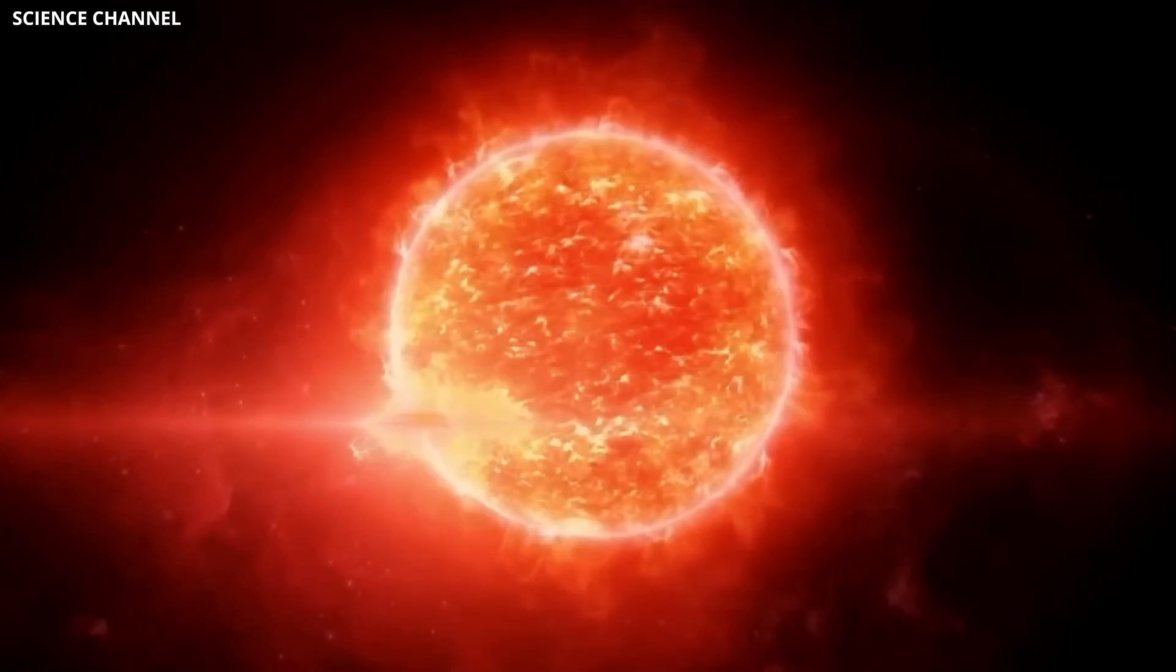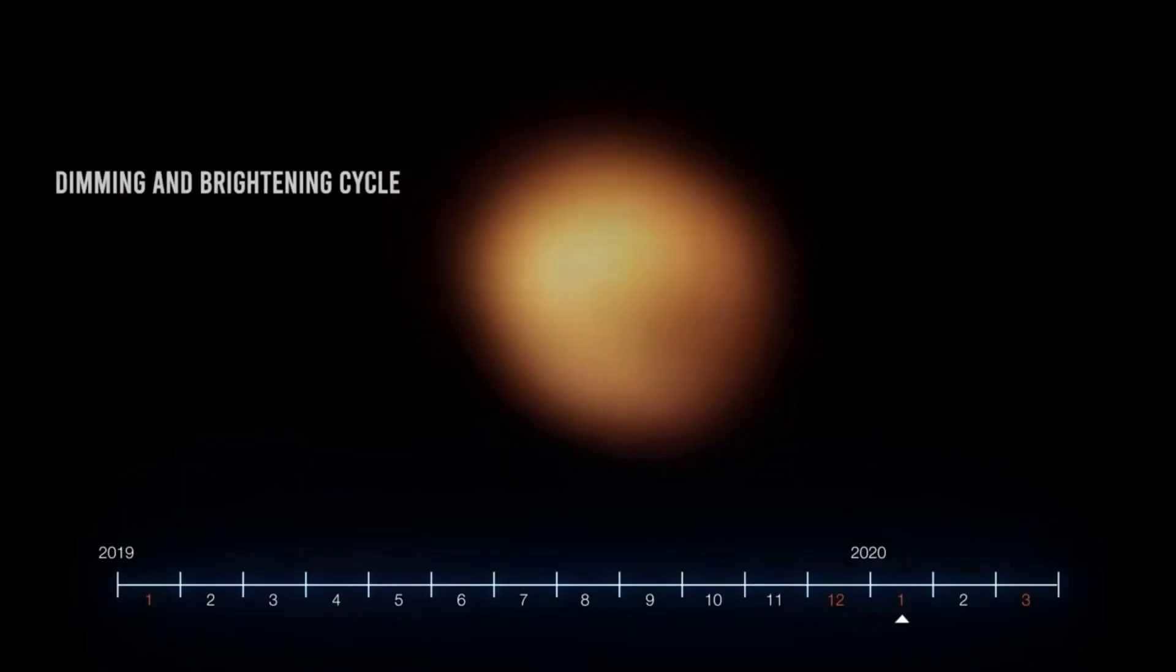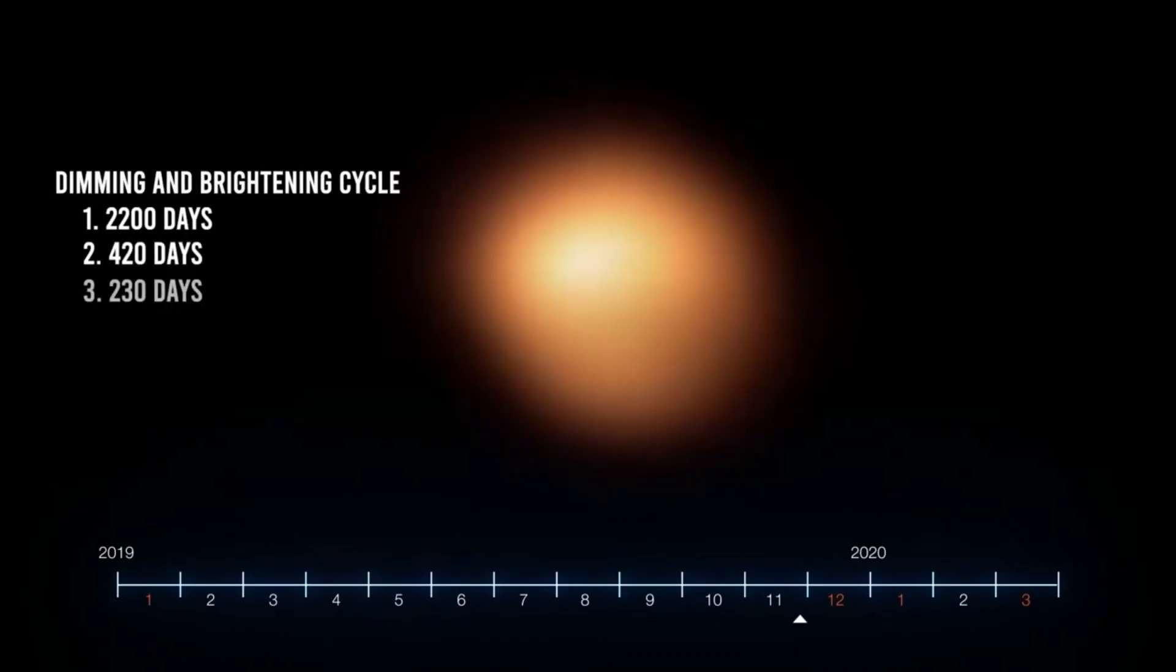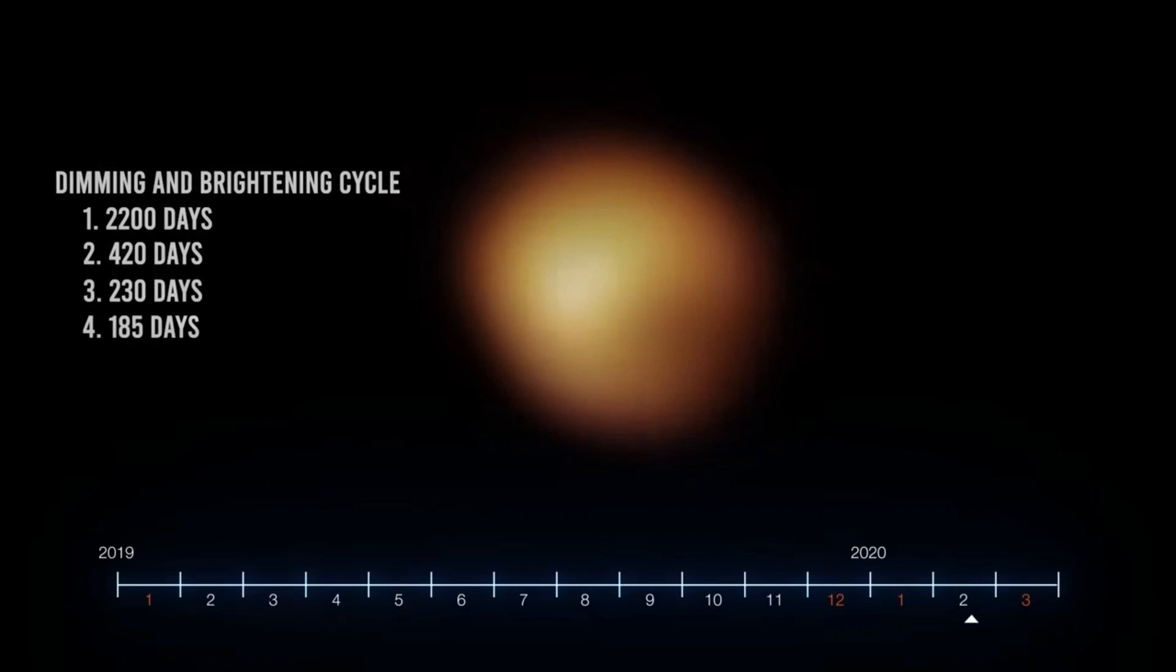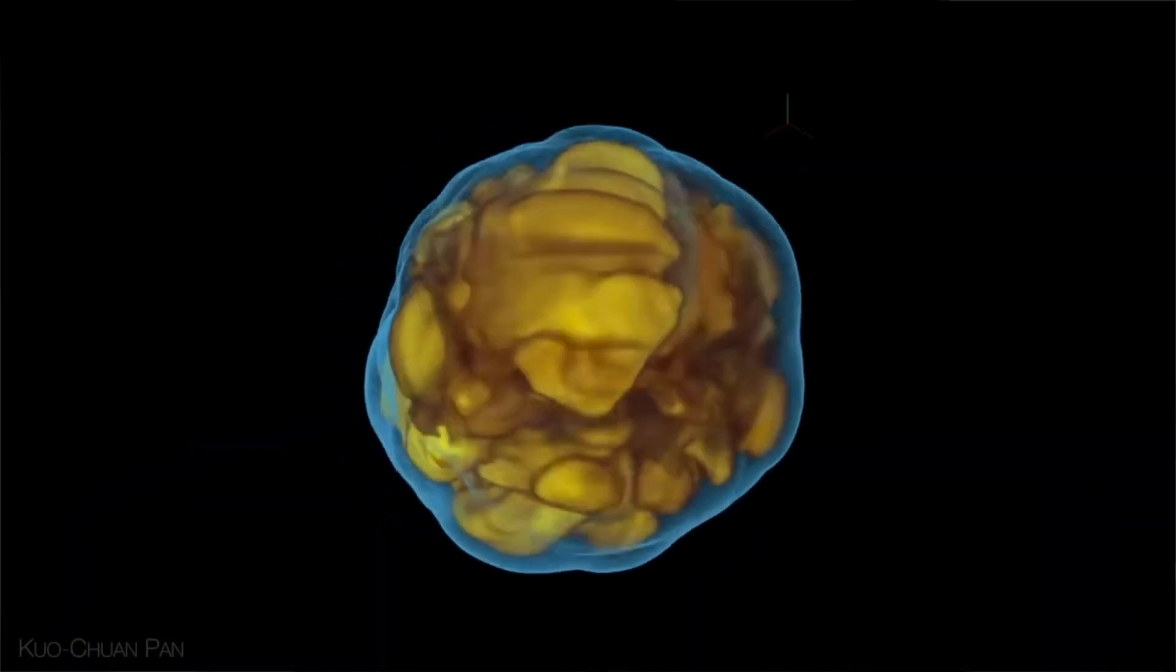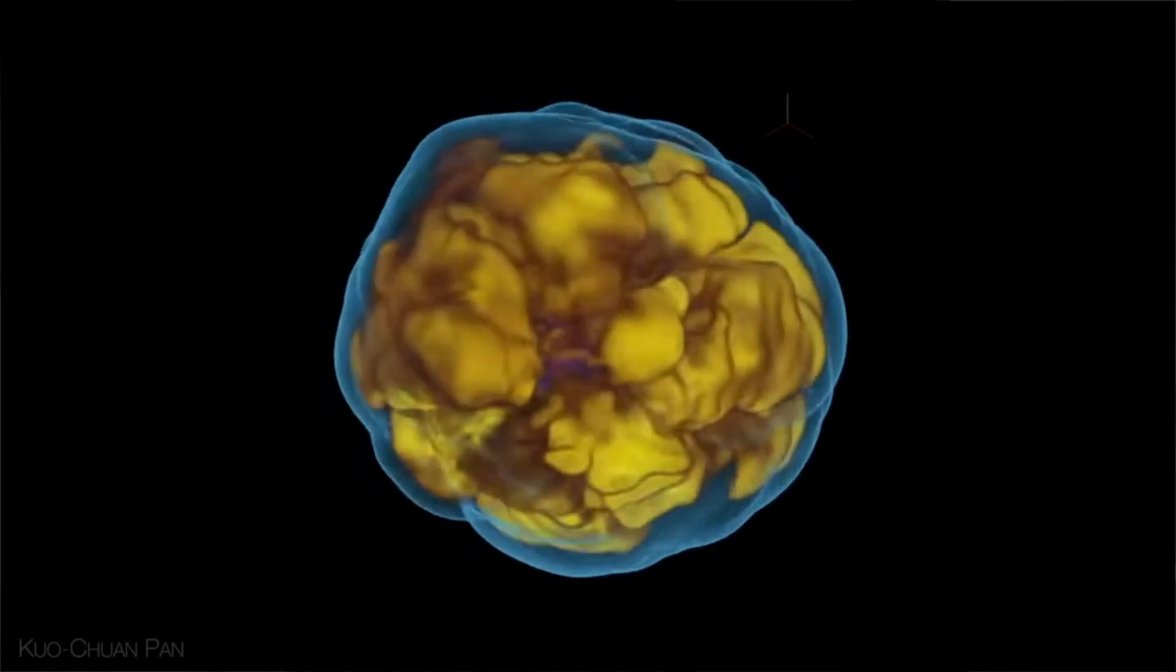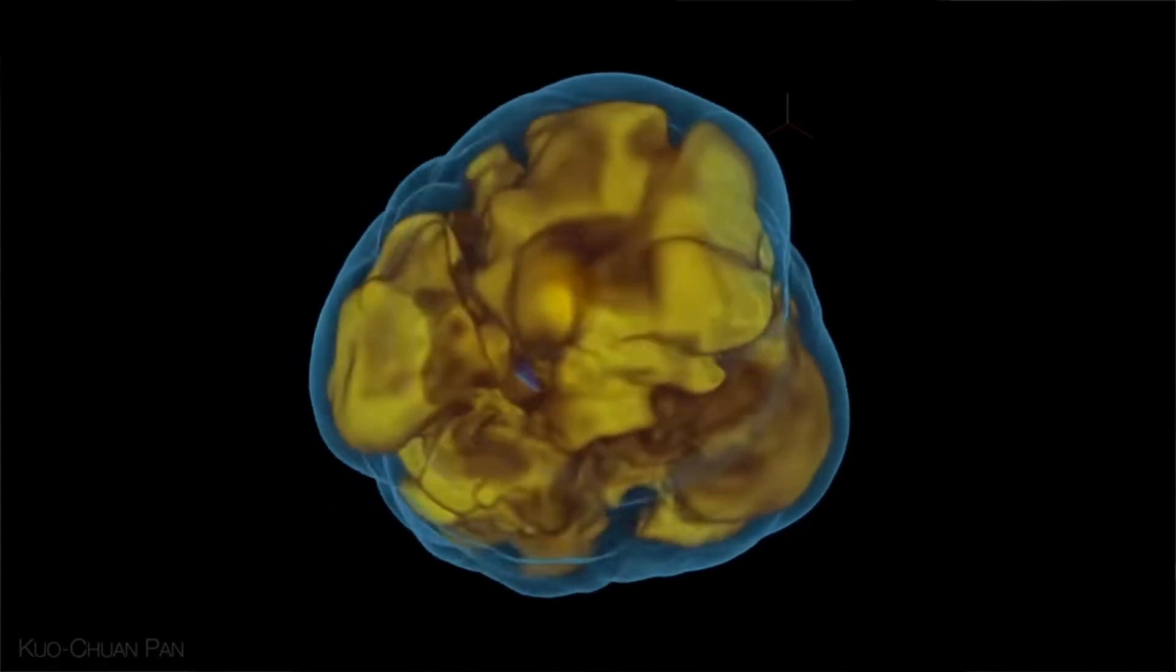Astronomers typically consider the 420-day cycle to be the main in-out pulse, with the shorter cycles as overtones. The period of 2,200 days or 6 years is generally not considered part of these pulsations and is instead called the secondary period, a feature of unknown origin common in one-third of supergiant stars.